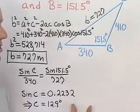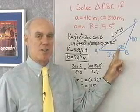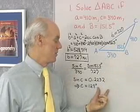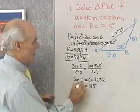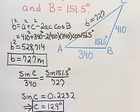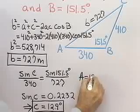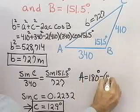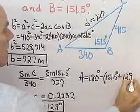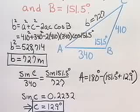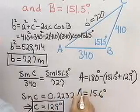So 12.9 degrees. I don't have to check for an angle C prime, like I would in the ambiguous case, because I already have an angle in this triangle that's bigger than 90 degrees. So I'm not going to have another obtuse angle, so there's no need to say 180 minus 12.9 degrees. This is angle C. Last thing I have to do is find angle A, and angle A will be 180 degrees minus 151.5 degrees plus my 12.9 degrees. That comes out to be 15.6. That's angle A.